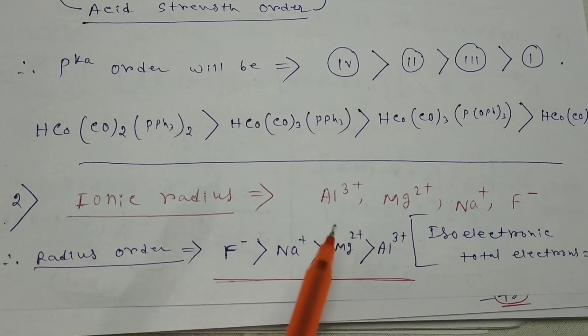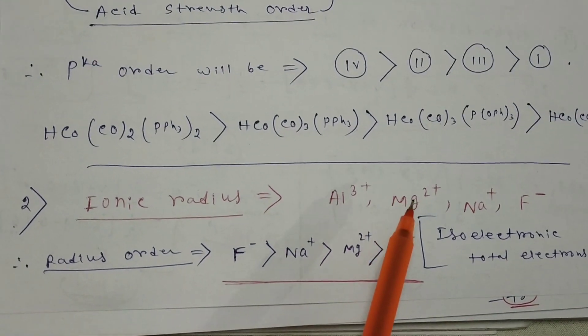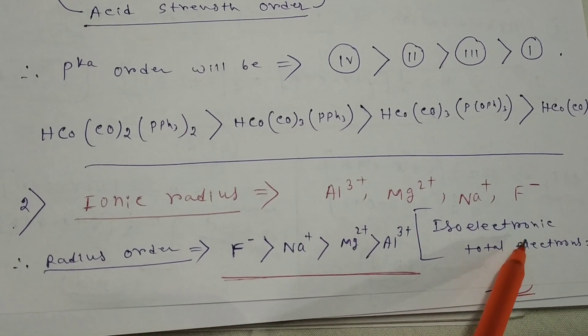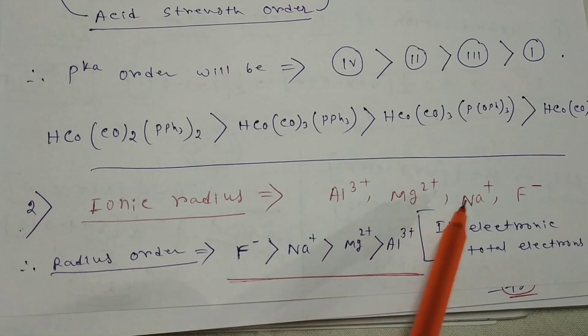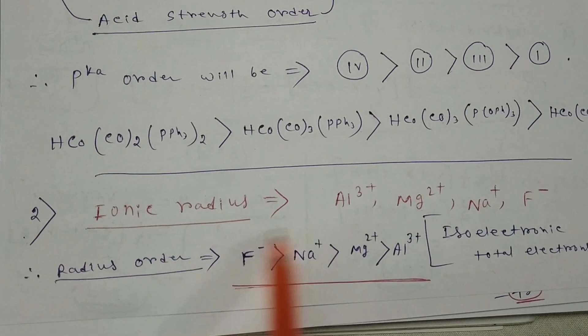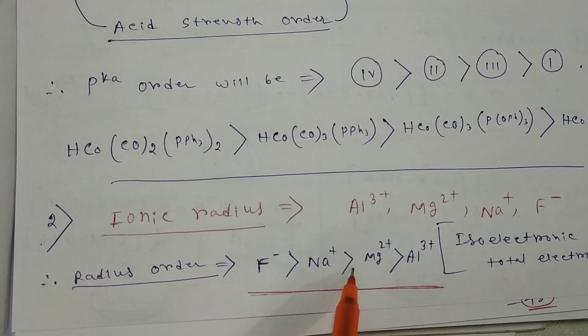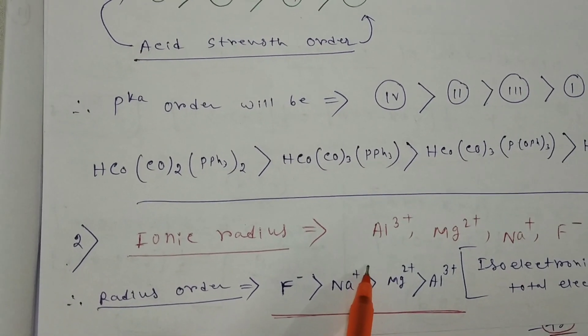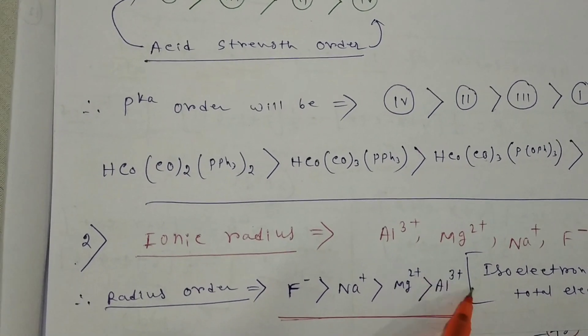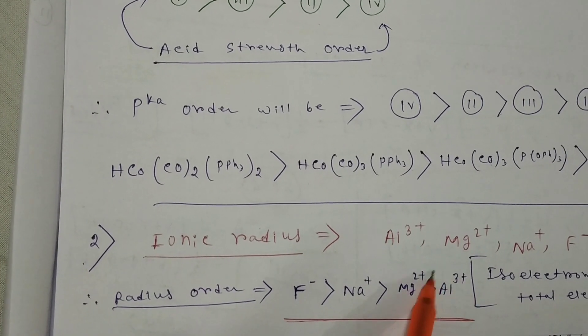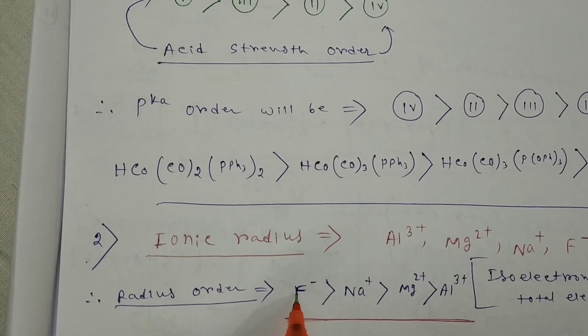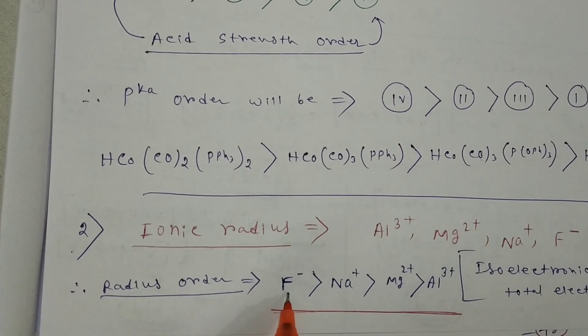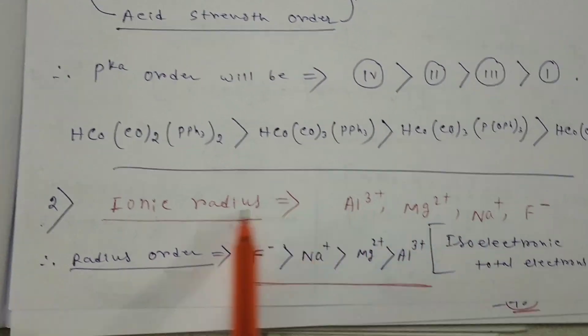Second question was ionic radius of Al3+, Mg2+, Na+ and F-. Here all are isoelectronic species with total 10 electrons. We know when positive charge increases, nuclear charge increases, so atomic radius decreases. Aluminum has three plus oxidation state, so its radius will be lesser. F- has lesser nuclear charge, so it has more radius than Na+, then Mg2+, then Al3+. This will be the correct order.